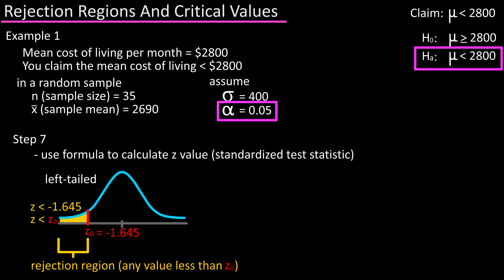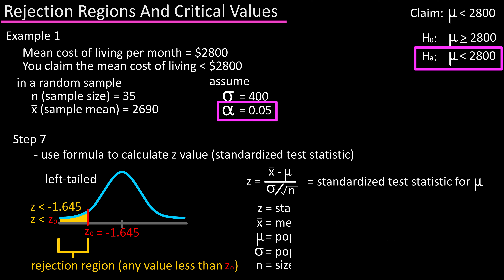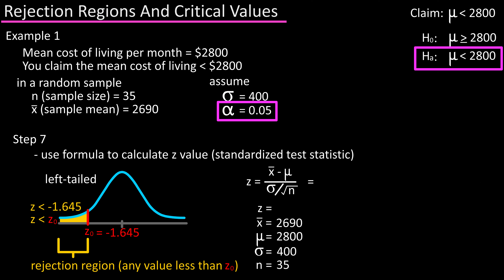Step seven: use the formula and calculate the z-value, or the value of the standardized test statistic. The formula is z equals x-bar minus mu, divided by sigma over the square root of n. In our example, x-bar equals 2690, mu equals 2800, sigma equals 400, and n equals 35. Plugging these into the formula, we get z equals negative 1.627.